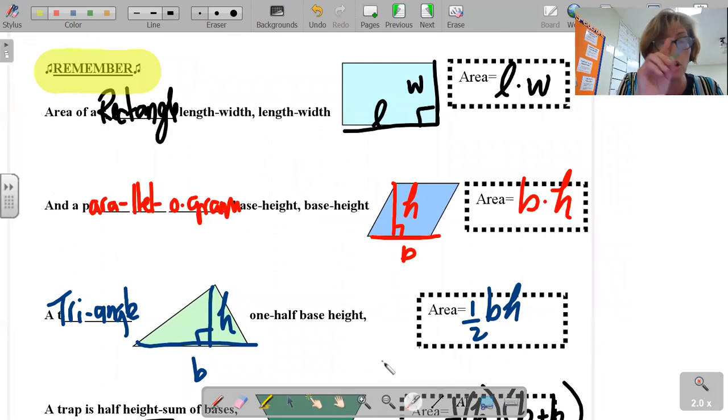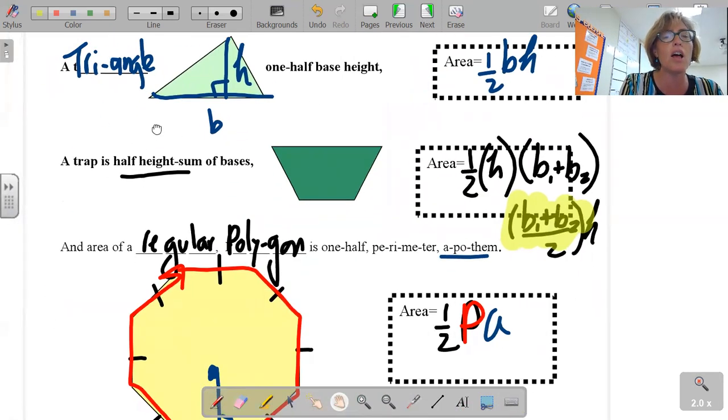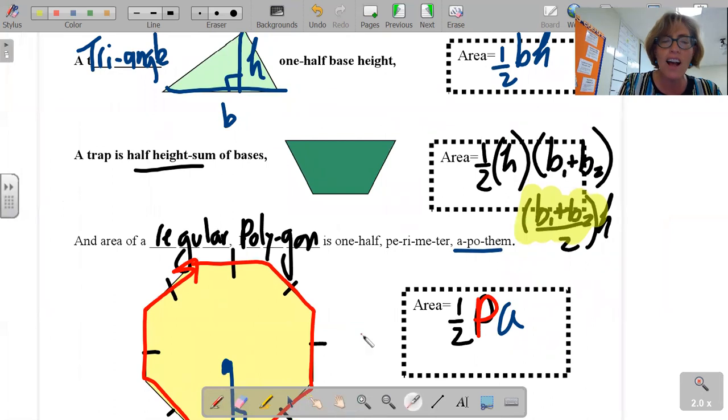So right here, ready? Yes, you're singing. You're going to try to sing this with your family. The area of a rectangle: length width, length width. And a parallelogram: base height, base height. A triangle: one-half base height. A trap is half height sum of bases. And the area of a regular polygon is one-half perimeter apothem. Boom boom boom. Try singing that on your own folks. See if you can't bring that to the dinner table just for giggles.